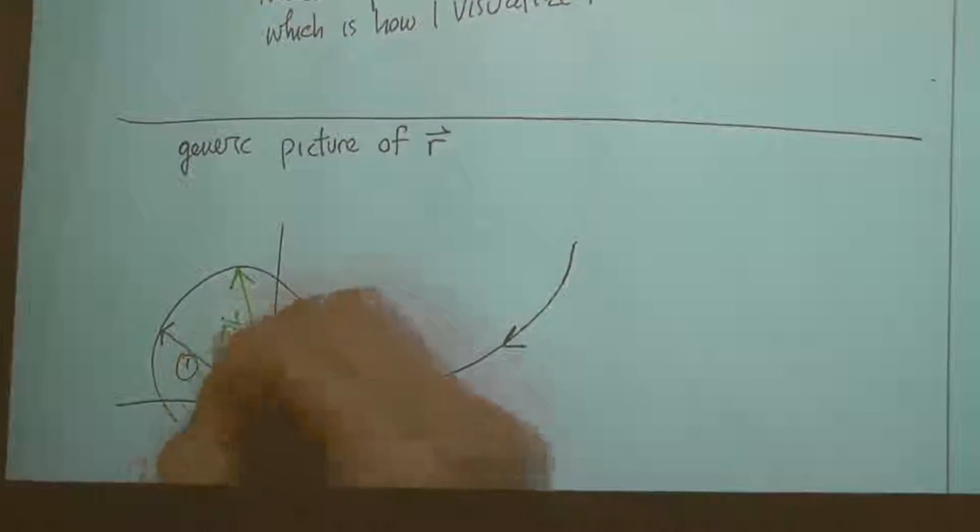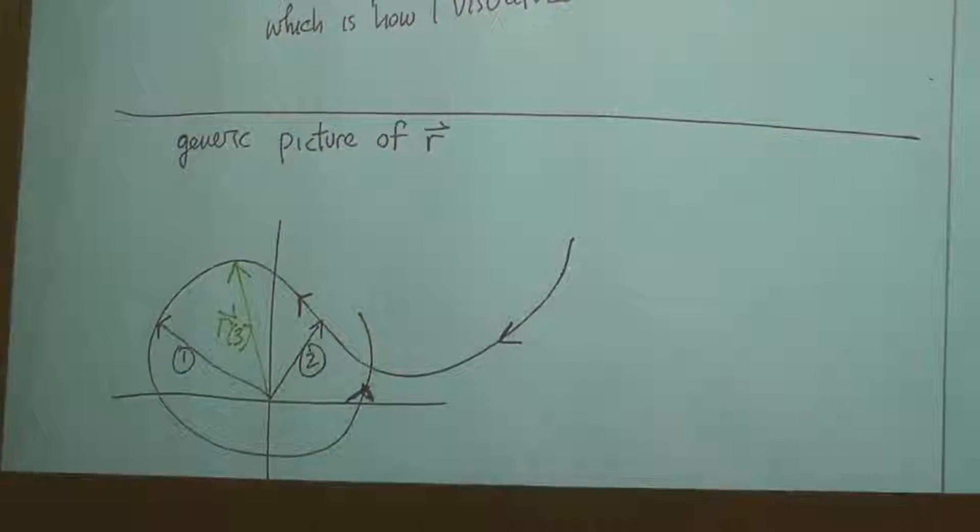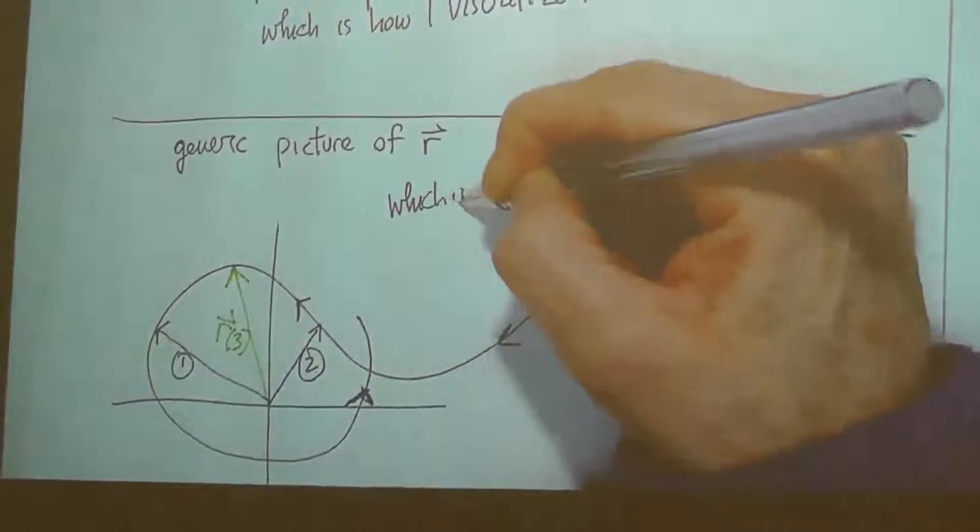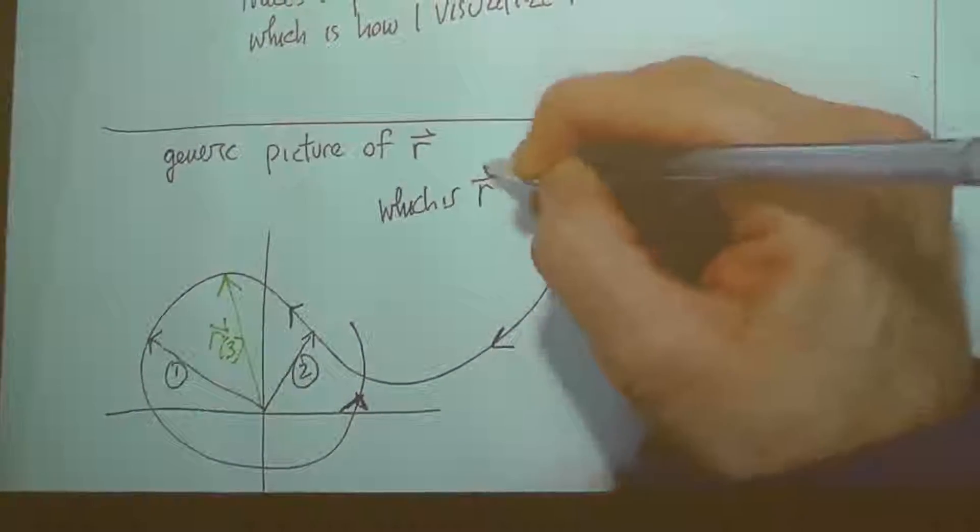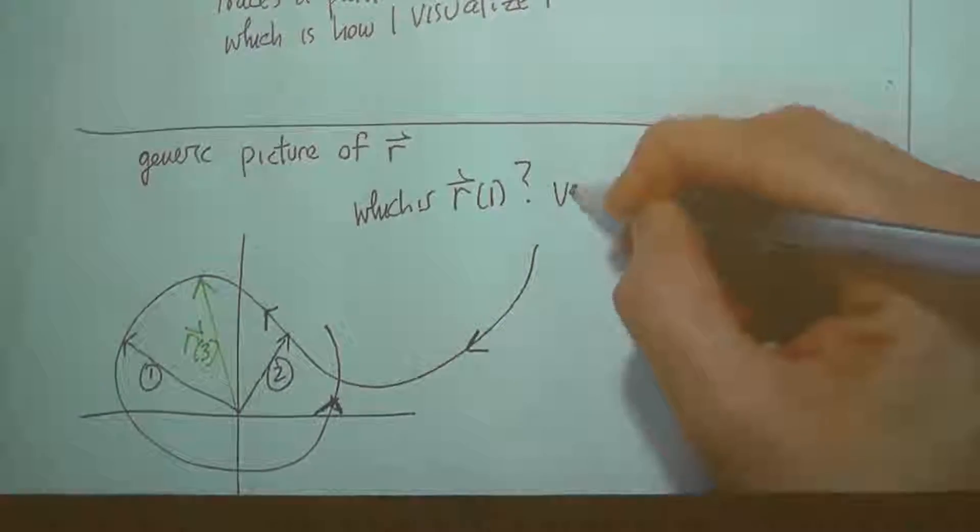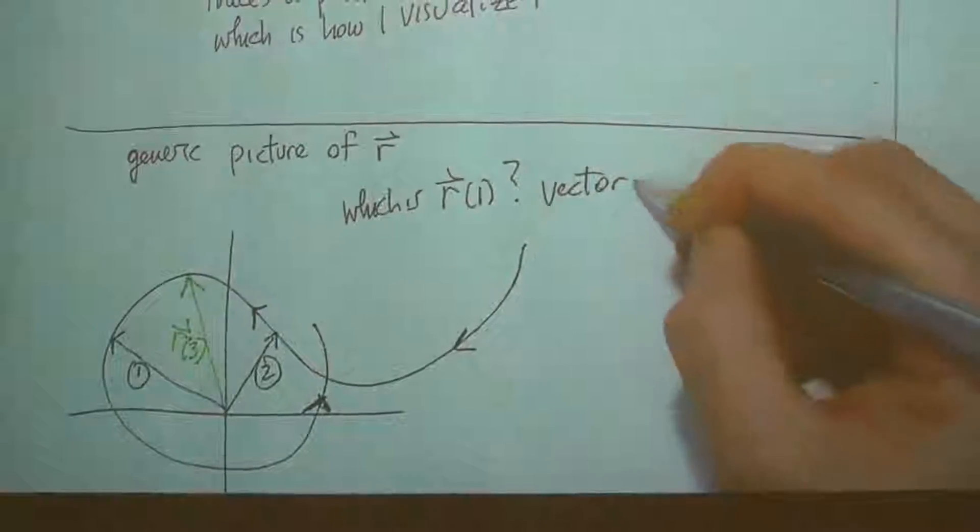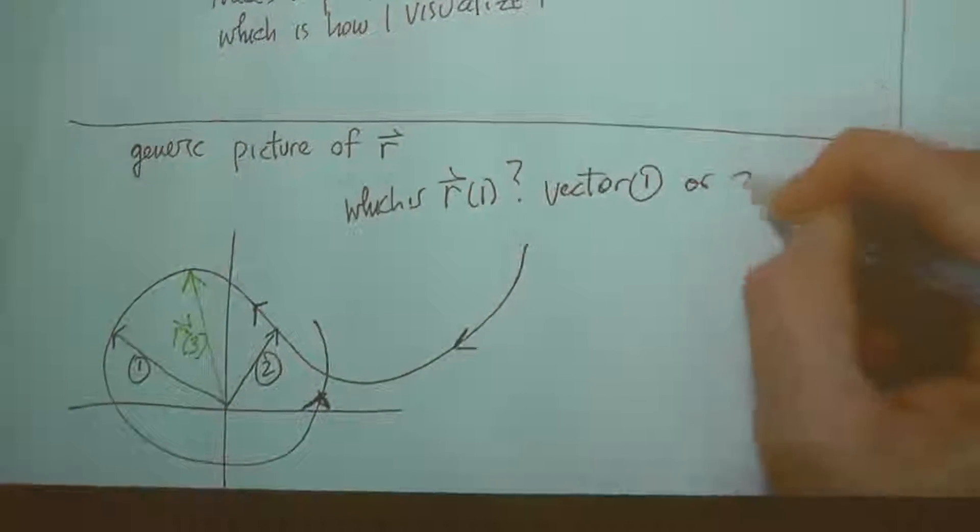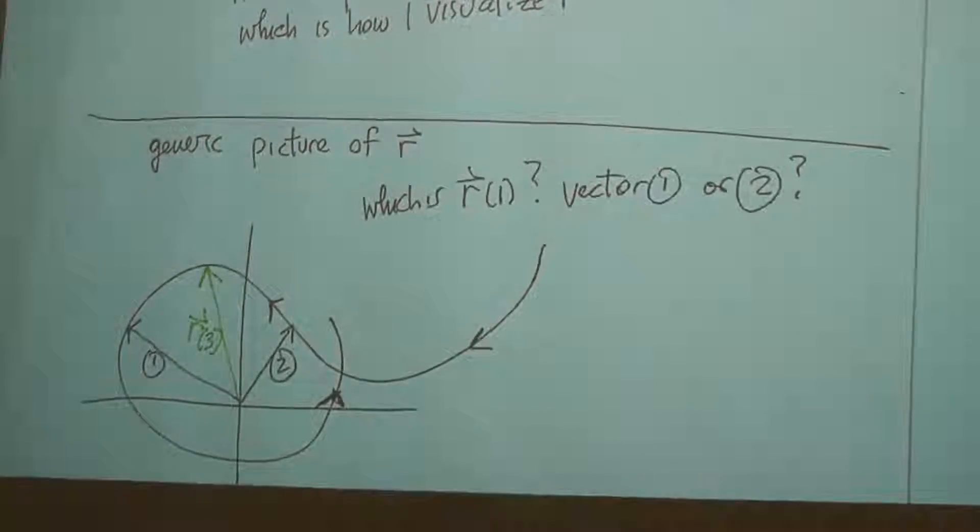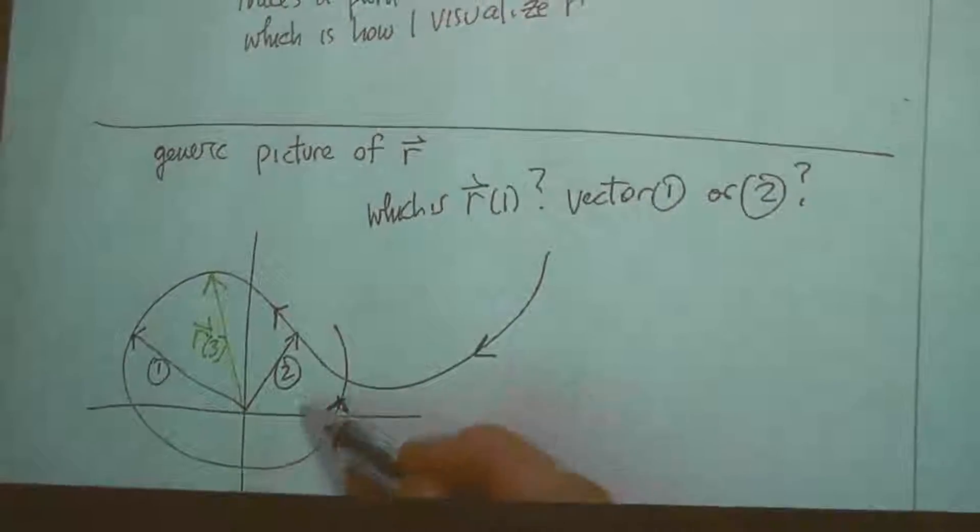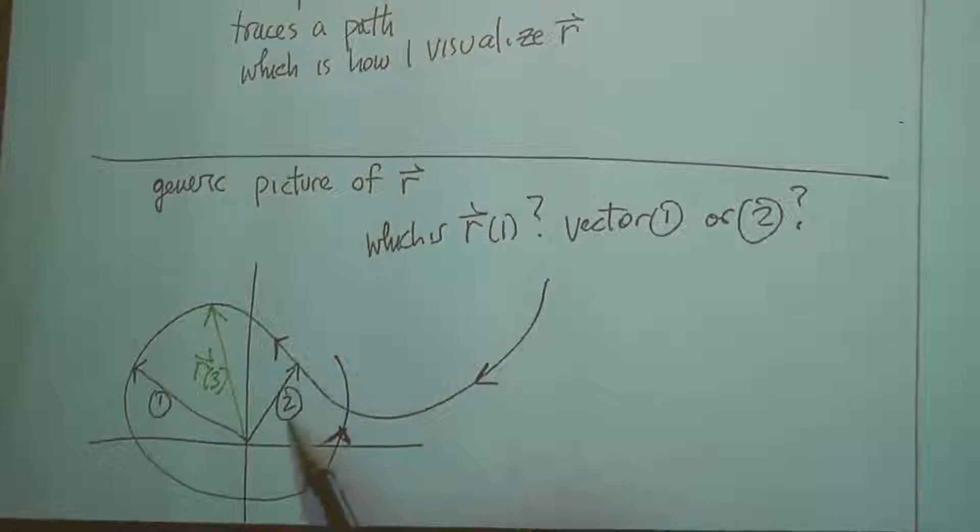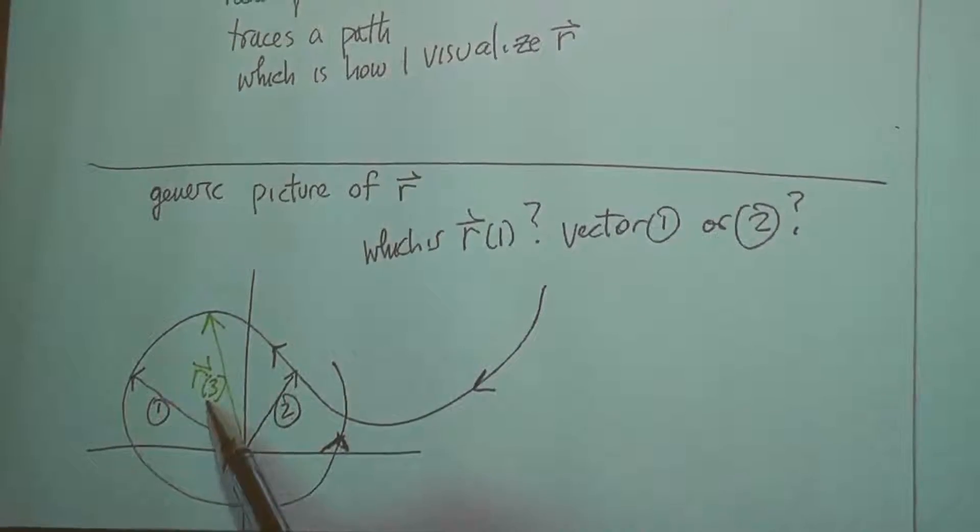If I told you r of 3 corresponded to this vector. And I gave you a couple of choices here. Call this vector 1, call that vector 2. And I said, which is r of 1, vector 1 or 2. Look at the direction of motion. And so, prior time, this is r of 3. It would be vector 2.